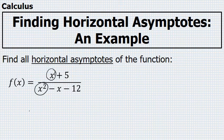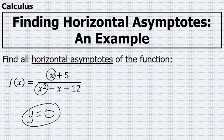There is a horizontal asymptote at the line y equals 0. It's as simple as that.